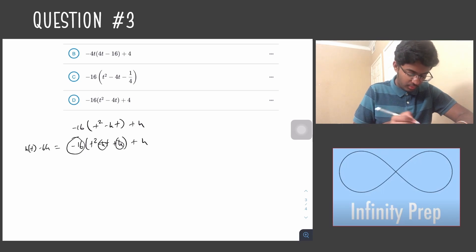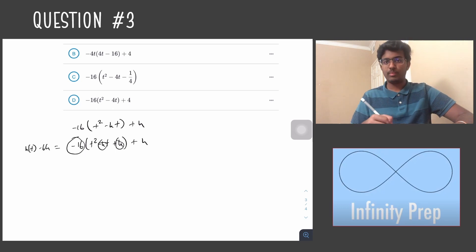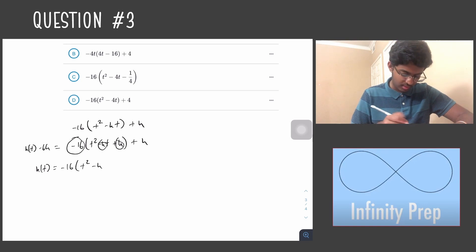And when we move this to the other side we get h(t) = -16(t² - 4t + 4) + 68.